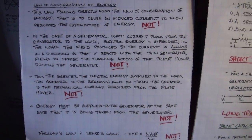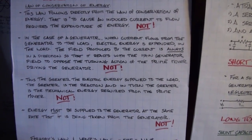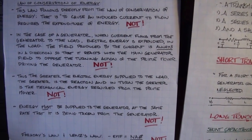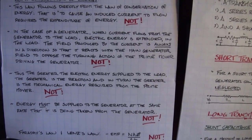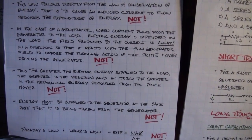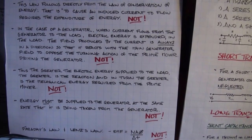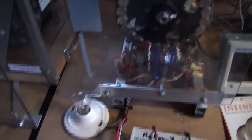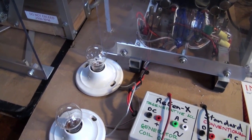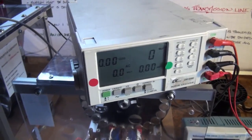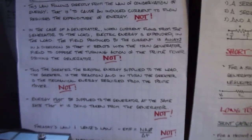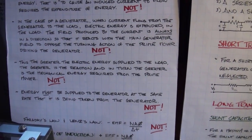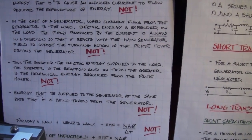It's completely in agreement with the law of conservation of energy. In the case of a generator, when the current flows from the generator to the load, electric energy is expended in the load. The field produced by the current is always in a direction so that it reacts with the main generator field to oppose the turning action of the prime mover driving the generator. This is exactly what we saw when the conventional generator coil delivered 9 watts to the light bulbs — we saw an increase in our input to our prime mover of 9 watts. Thus, the greater the electric energy supplied to the load, the greater is the reaction and in turn the greater is the mechanical energy required from the prime mover.